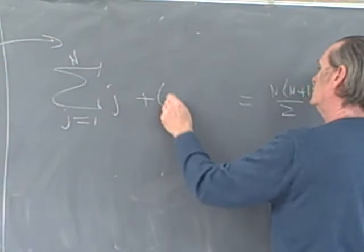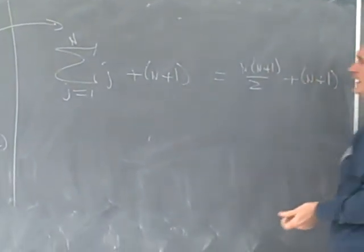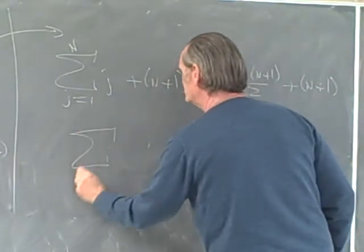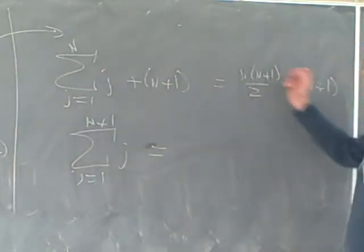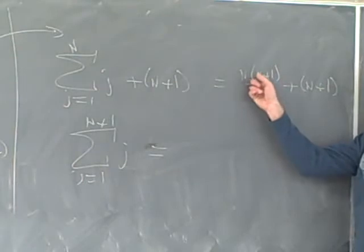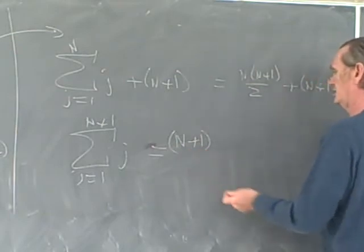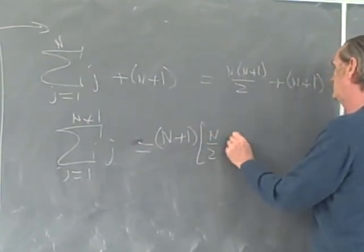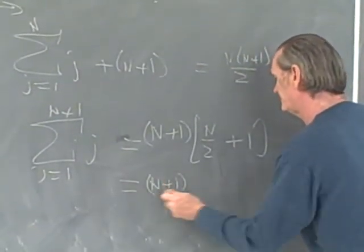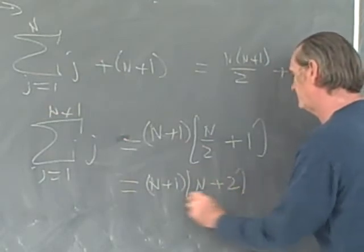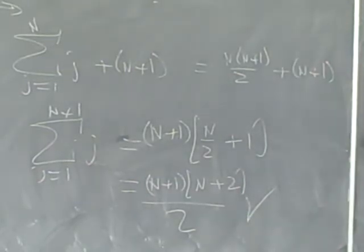We add (n plus 1) to both sides of the equation. On the left-hand side we get the sum from j equals 1 to n plus 1 of j. On the right-hand side, rather than multiplying out, we factor out the (n plus 1), getting (n plus 1) times (n over 2 plus 1), which equals (n plus 1) times (n plus 2) over 2. That's exactly what we were trying to show, so this identity holds.